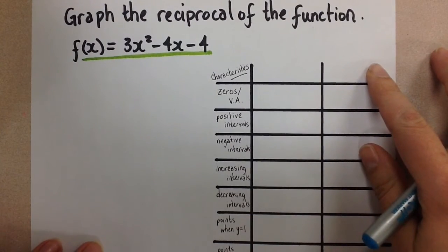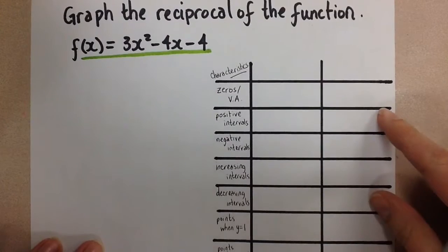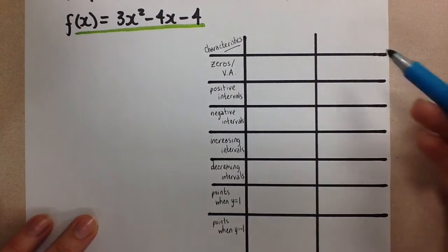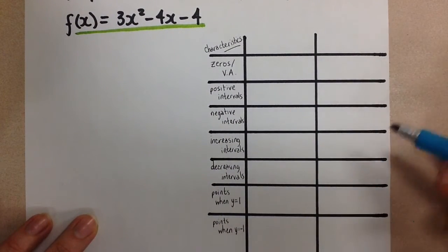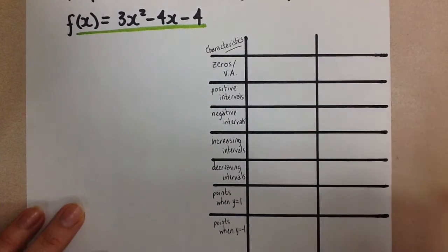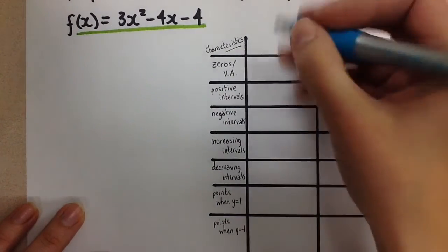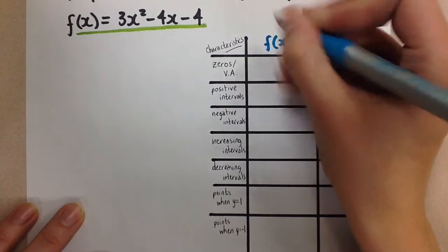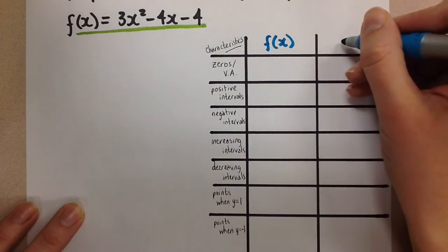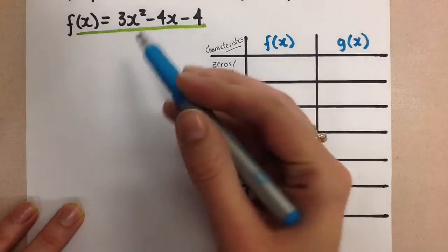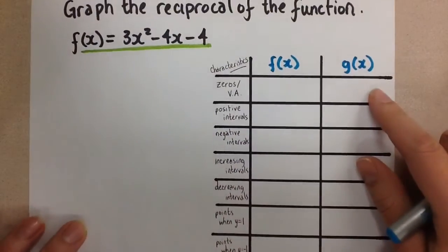I'm going to do this using the chart method that we learned in class. You can see that I have the chart set up, and we're just going to fill this out — one column for the original function, that is this quadratic equation, and the other column for the reciprocal function, which will be 1 over this equation.